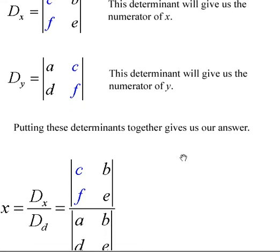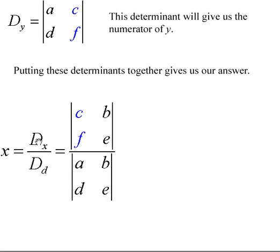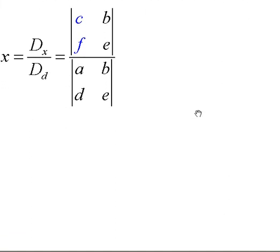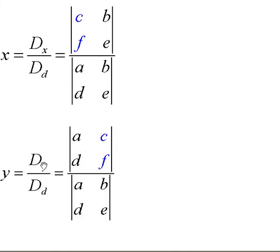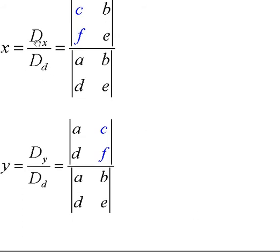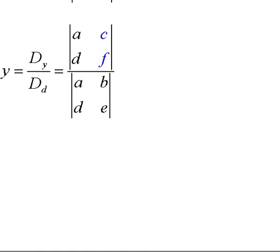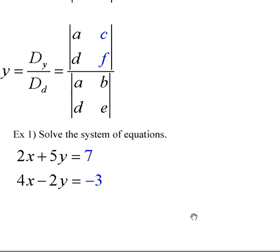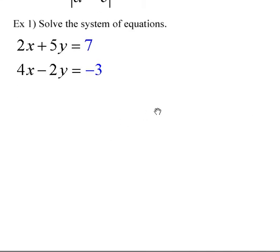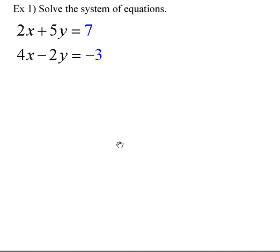When we find these three determinants of those two-by-two matrices, we put them together to get our answer. Some books will write them in this format: the determinant of the numerator of x over the determinant of the denominator for x, and the determinant of the numerator of y over the determinant of the denominator for y. We don't expect you to memorize the letters, but the process. Let's look at a numerical example and put that formula to work.